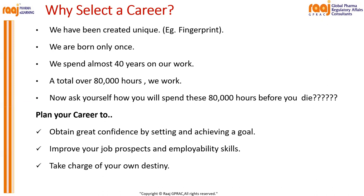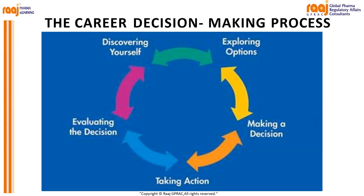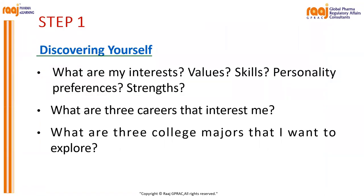Invest your time wisely to make your career decision. There are five levels of career decision-making. Step 1 is discovering yourself — you know yourself best. Ask: What are my interests? What are my values? What are my skills? What are my personality preferences, strengths, and weaknesses? What are three careers that interest me? What are three college majors I want to explore? Discover yourself and ask questions of yourself first.